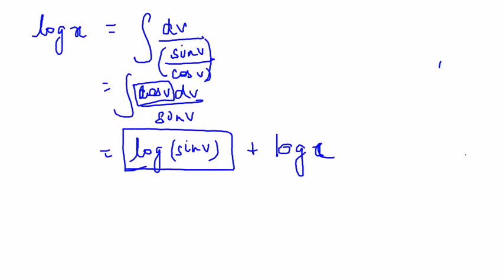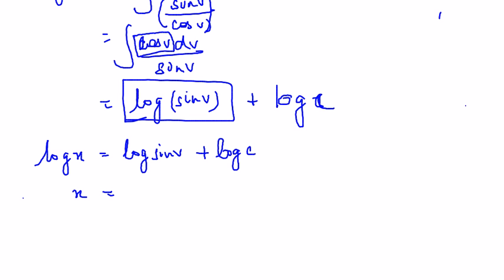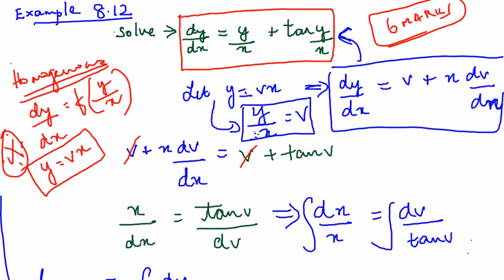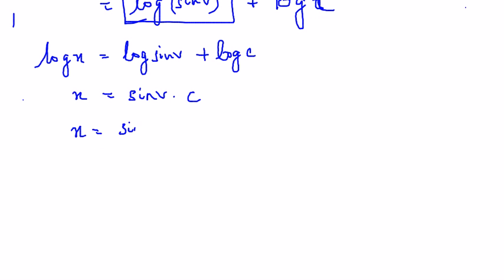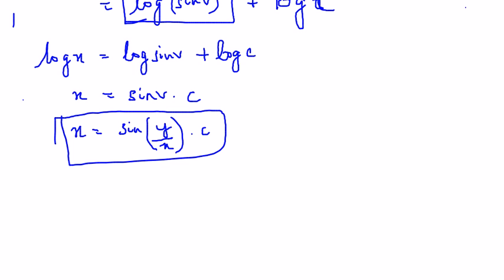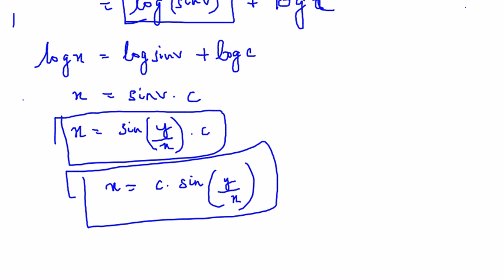So this equation when written neatly becomes log x equals log sin v plus log c. And this you can remove log everywhere: x equals sin v into c. And in place of v we can now substitute y by x. So sin of y by x into c. Just writing it in a more better way will be c into sin of y by x. And this is your final answer.